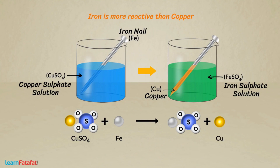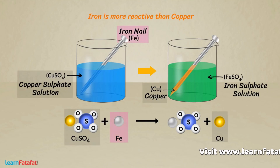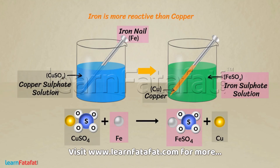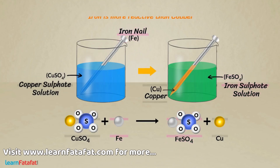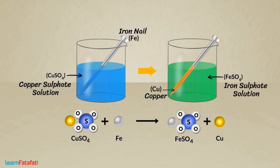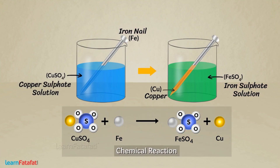By doing so, copper which is in compound form becomes free, while free iron gets attached to sulphate and forms a compound. Clearly, there is a change in chemical composition. Where there is a change in chemical composition, there is a chemical reaction.